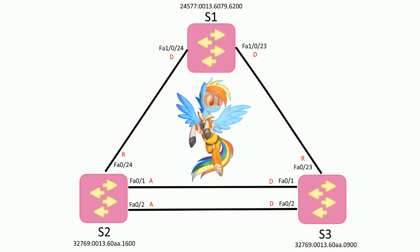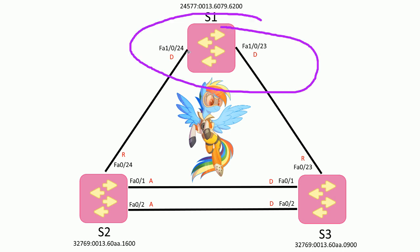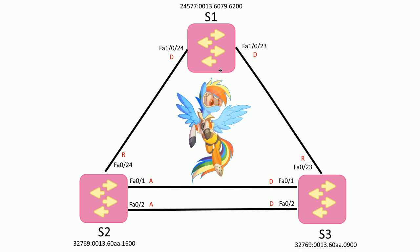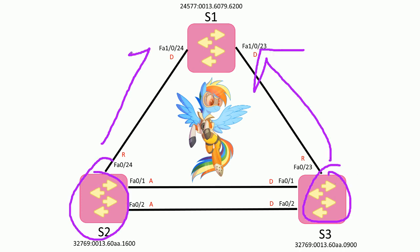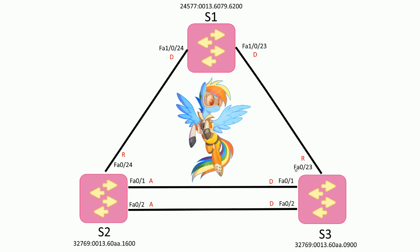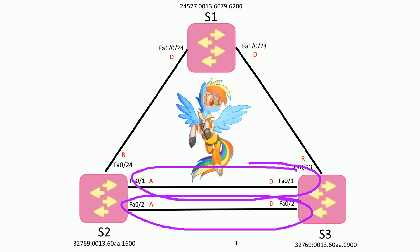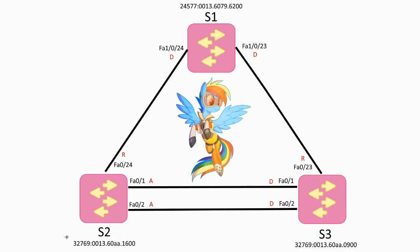I'm going to show you how spanning tree protocol works with hubs. First, let's look at a normal network — here I have three switches all connected together running rapid spanning tree protocol. Here we have the root bridge, so all ports on the root bridge are designated. S2 and S3 find their root ports going to the root bridge, then follow the protocol for designated ports and alternate block ports. The bridge priorities and MAC addresses all check out.